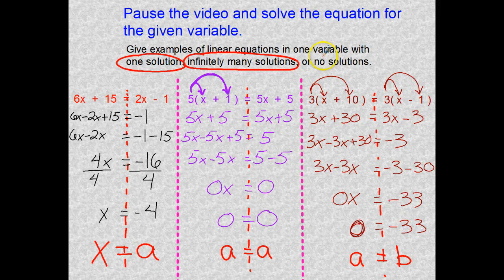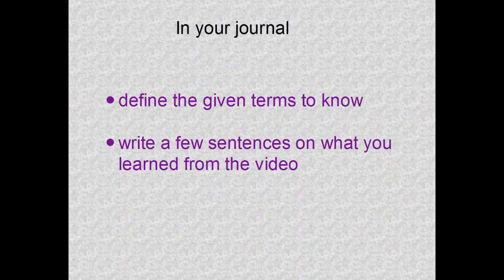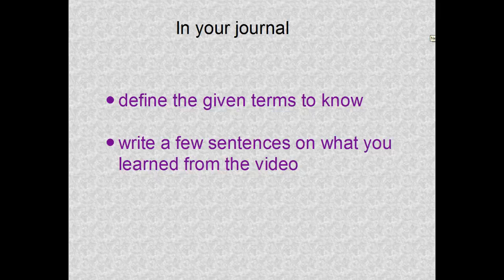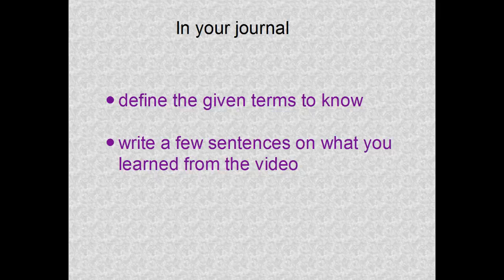If you ever get two different numbers that can never be equal — like 0 never equaling negative 33, or 5 never equaling 10 — there is no X that will work in that equation. When you come to class this week we'll work through these together one-on-one or in small groups. In your journal, define the terms from page 2 and write a few sentences about what you learned from this video.